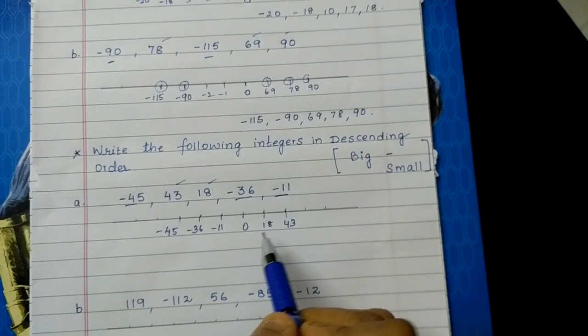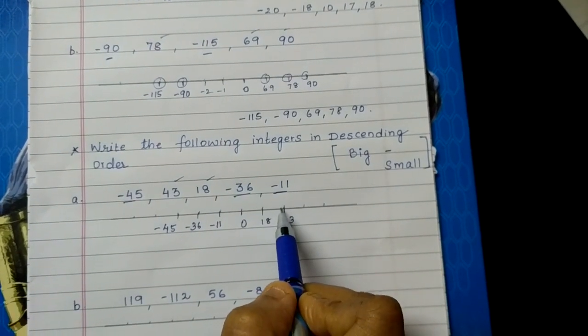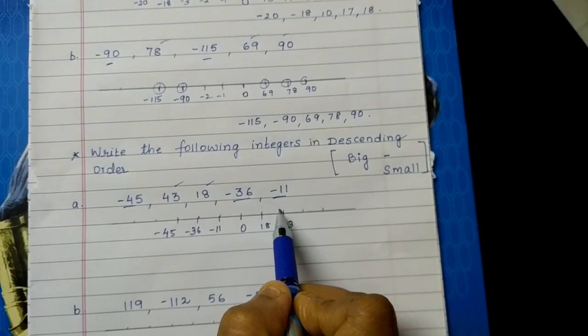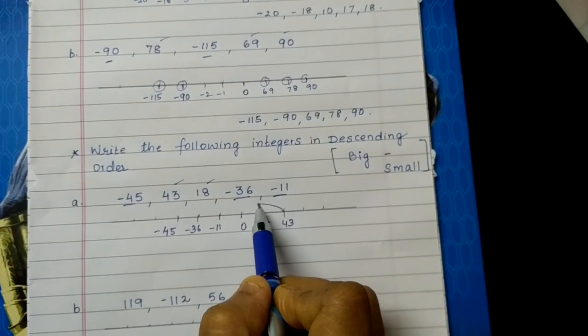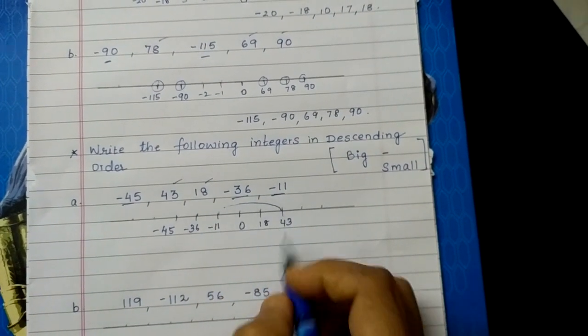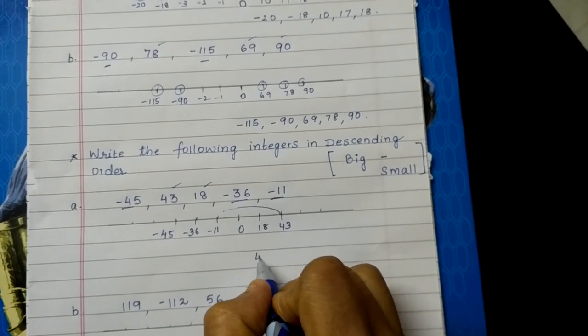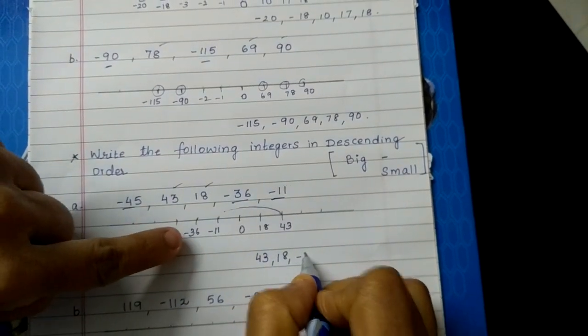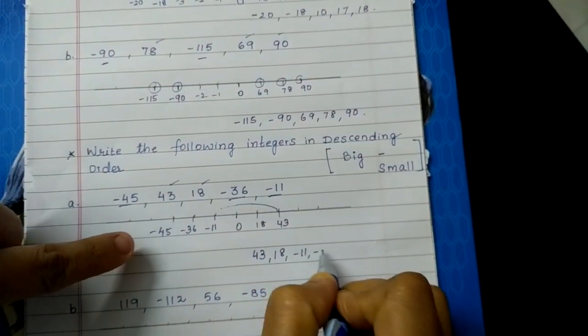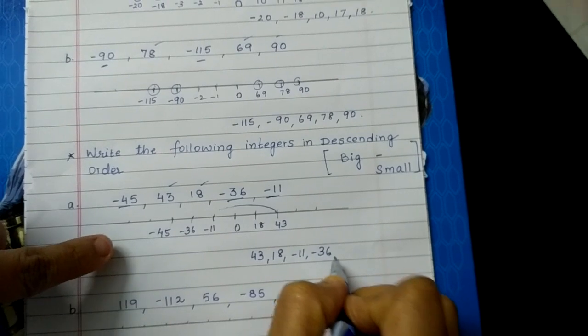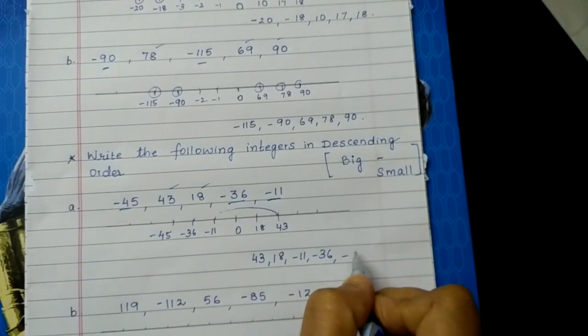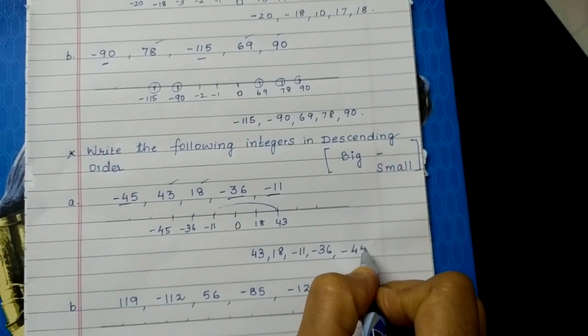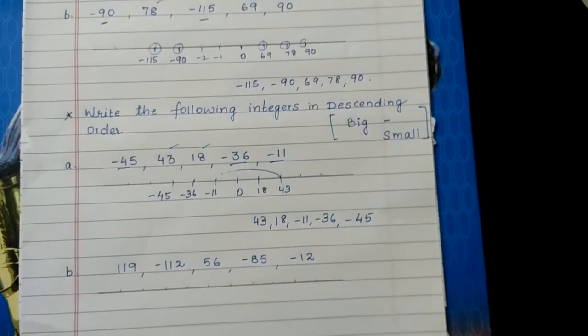Then comes minus 36 and then minus 45. Because it is descending order we have to move from right to left, so our answer will be 43, 18, minus 11, minus 36, and minus 45.